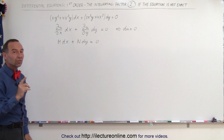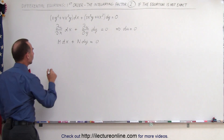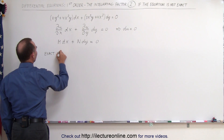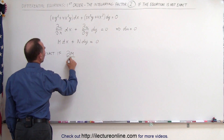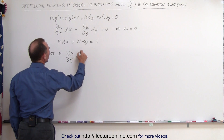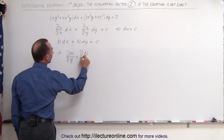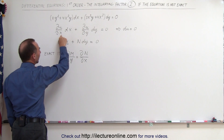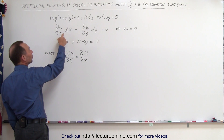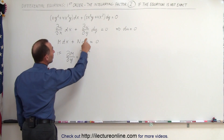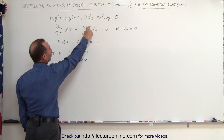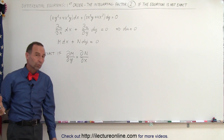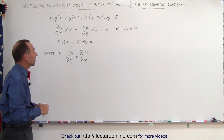We know that it is an exact equation if the partial of M with respect to y is equal to the partial of N with respect to x. That makes sense since M is the partial of u with respect to x — taking the partial again with respect to y — and N is the partial of u with respect to y taken with respect to x, so they must be equal.